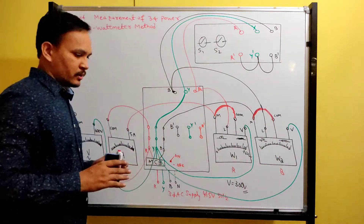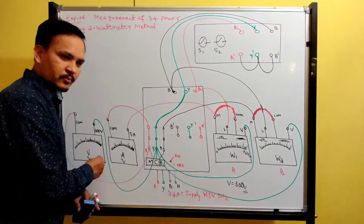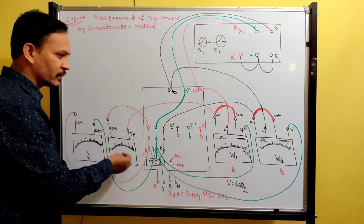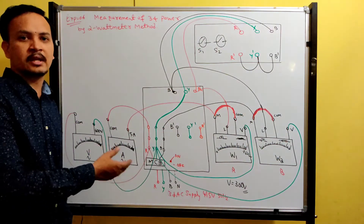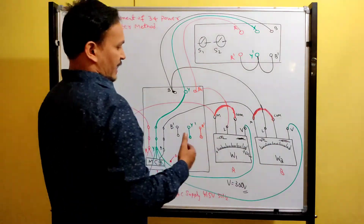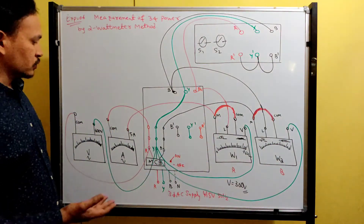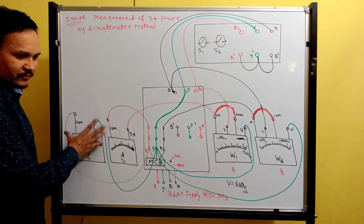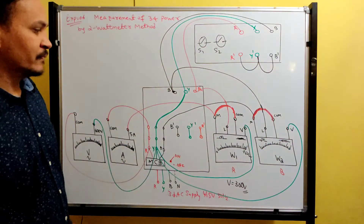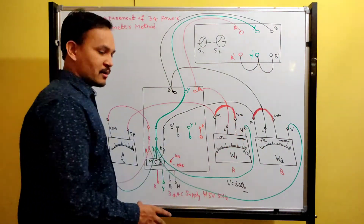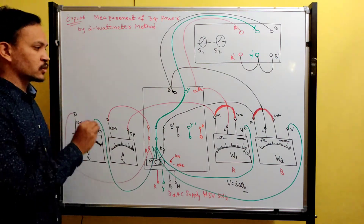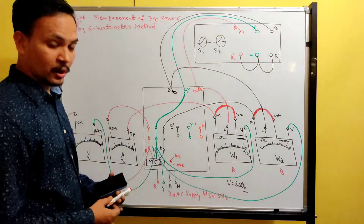Now for star connection: connect all lines to the supply, switch on the MCB, switch on the loads, and note all readings. Tabulate all readings in your tabular column. Then find the apparent power: root 3 × VL × IL. This should match the summation of W1 and W2 readings. Root 3 × VL × IL is apparent power, which should be more than the power consumed by the load.